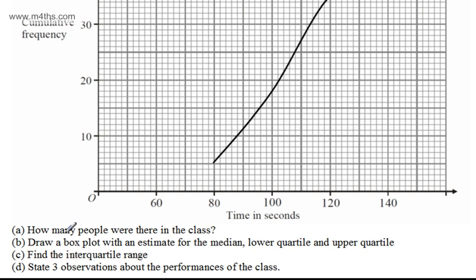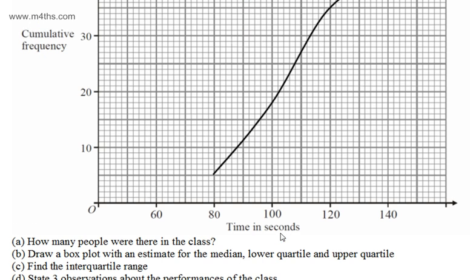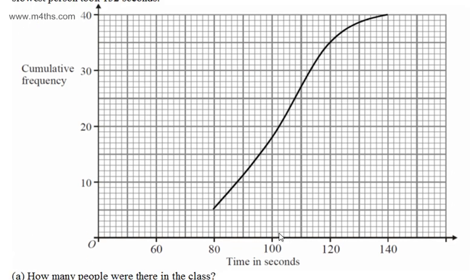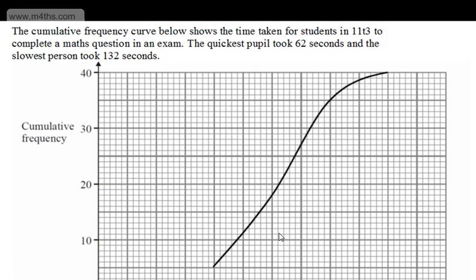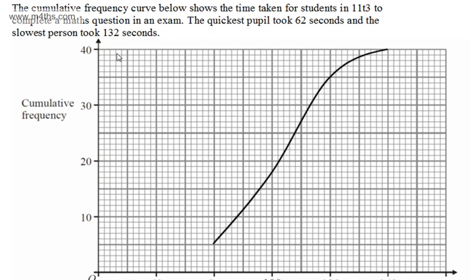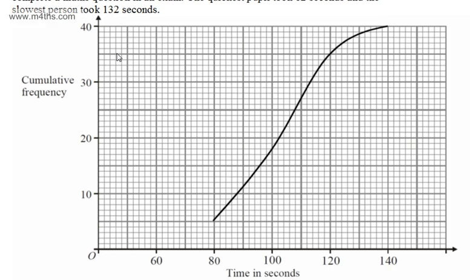In part B, we're asked to draw a box plot with an estimate for the median, lower quartile, and upper quartile. So when we're drawing a box plot, we want five things: the lowest value, which in this case is going to be 62, and the largest value, which is going to be 132. Then we need the lower quartile, the median, and the upper quartile. We have 40 people here.